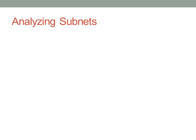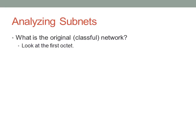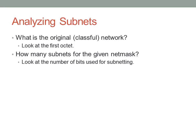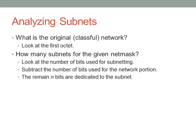When analyzing subnets, there are some key things to look for. First, identify the original classful network by looking at the first octet. Second, determine how many subnets are possible for the given subnet mask — we're borrowing additional bits beyond those allocated for the network portion in the original classful network. Based on the number of borrowed bits n, we can have 2 to the n possible subnets. To find n, take the number of bits in the subnet mask — in CIDR notation it's the number after the slash — and subtract the bits used for the original network portion. For a class A address that's 8 bits, for class B it's 16, and for class C it's 24.